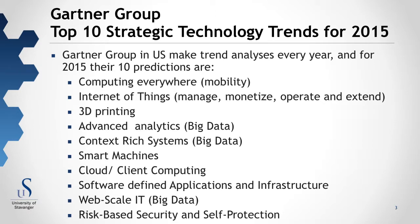The first paper from the Gartner Group identifies 10 strategic technology trends for 2015. The Gartner Group in the US makes this kind of trend analysis every year. Their first prediction is computing everywhere, which is about mobility. The second is the internet of things — to manage, monetize, operate and extend how the internet is included in everything around us.